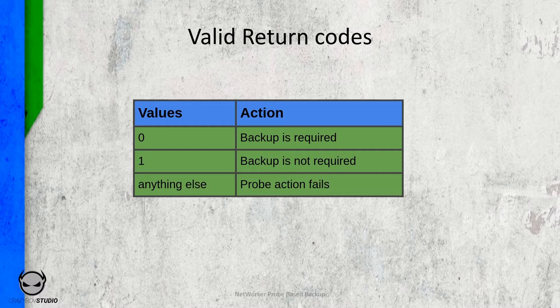Whereas if the return code is one, that would indicate that a client backup is not required, which means after the probe action the next action — the backup action — would not be triggered and will be ignored or skipped. Anything other than a zero or a one as a return code will cause the probe action to fail, which in turn would cause the workflow to fail as well.